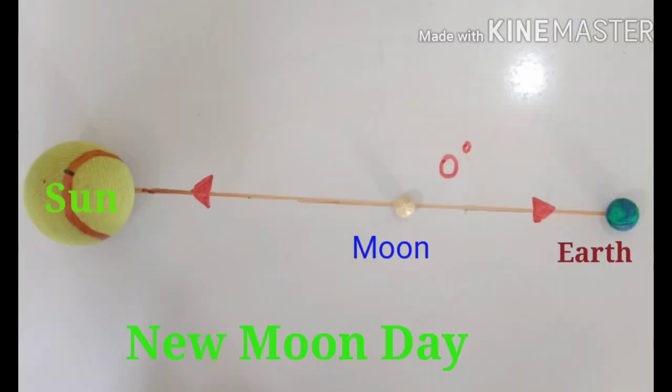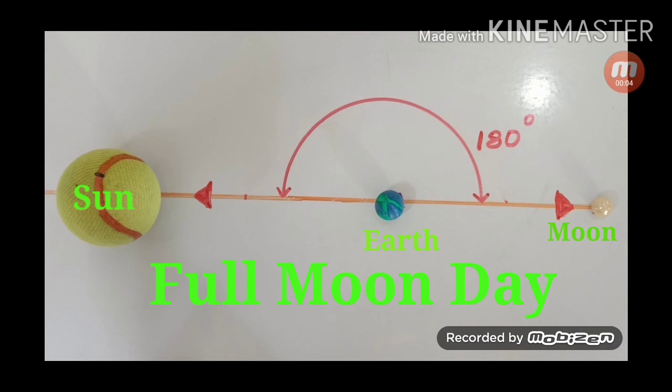On each new moon day, the lines joining the Earth and the Sun and the Moon make an angle of 0 degrees. Whereas, on each full moon day, this angle is 180 degrees.